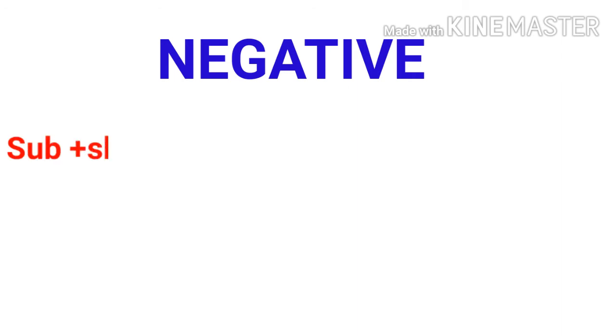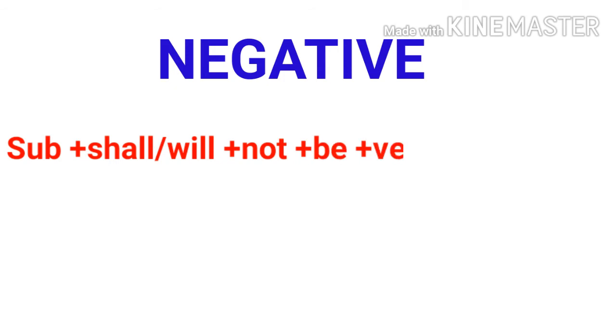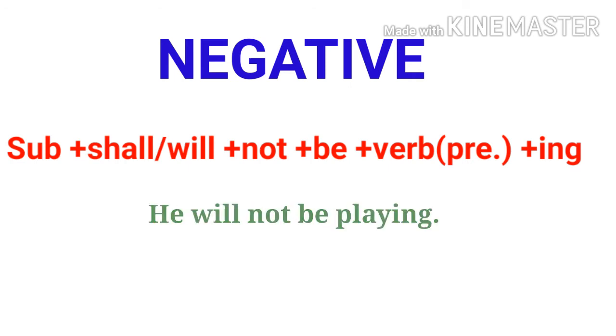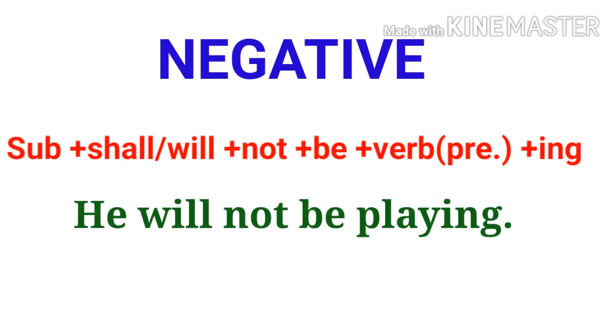Future Continuous Tense is negative. The formulation is: Subject plus shall/will plus not plus be plus main verb in present form plus -ing. Example: 'He will not be playing.'